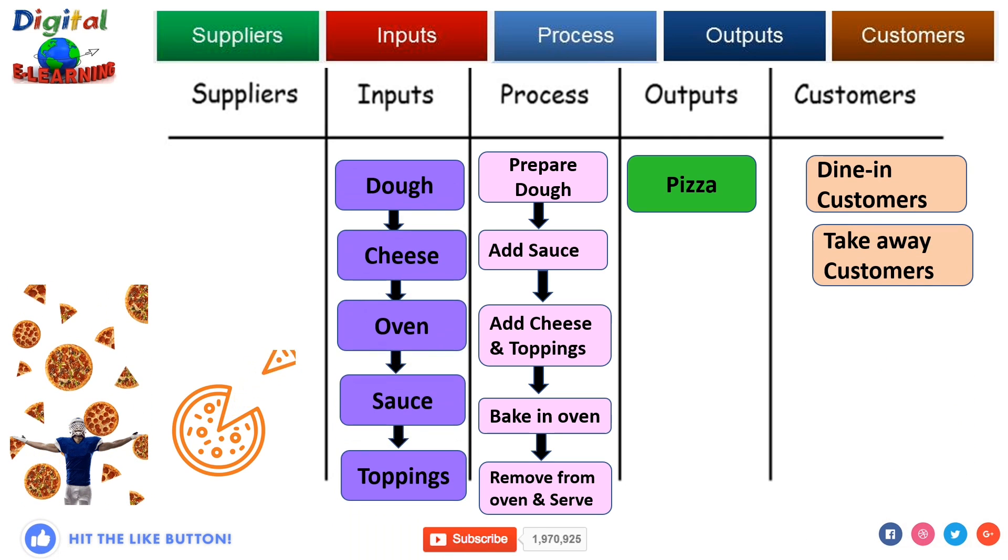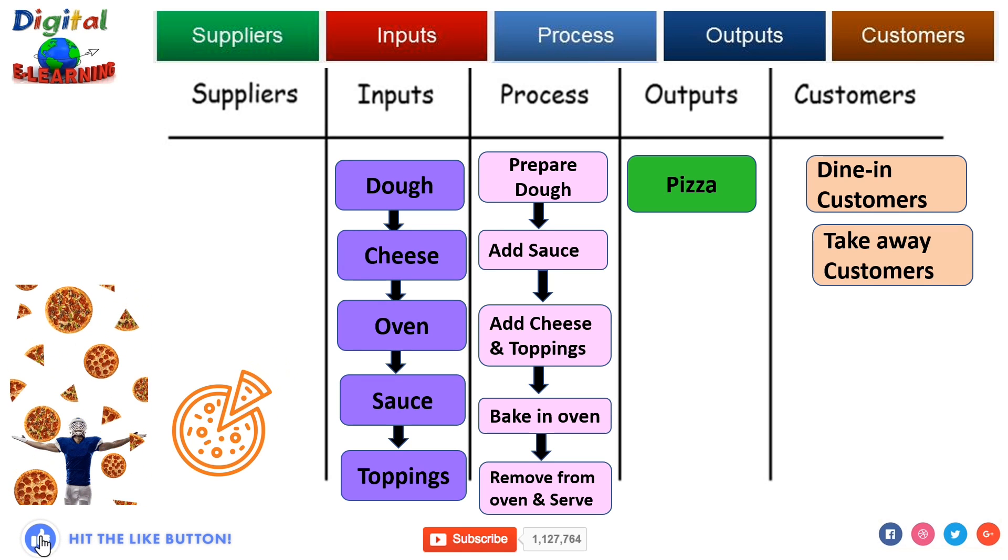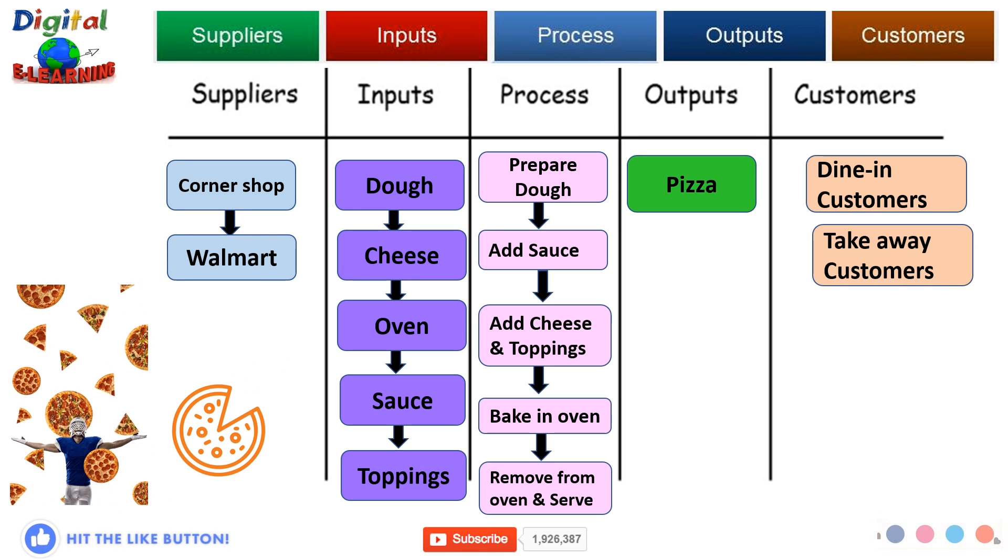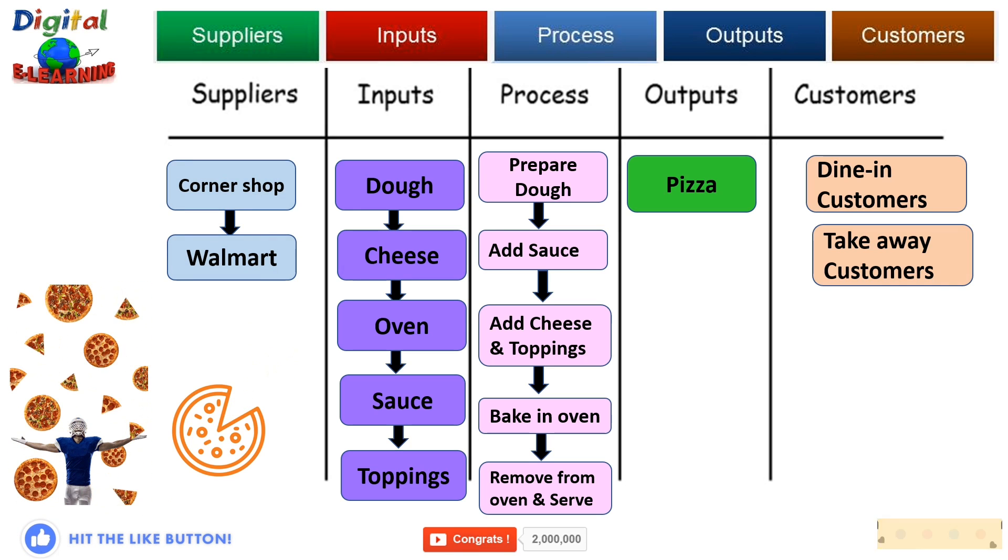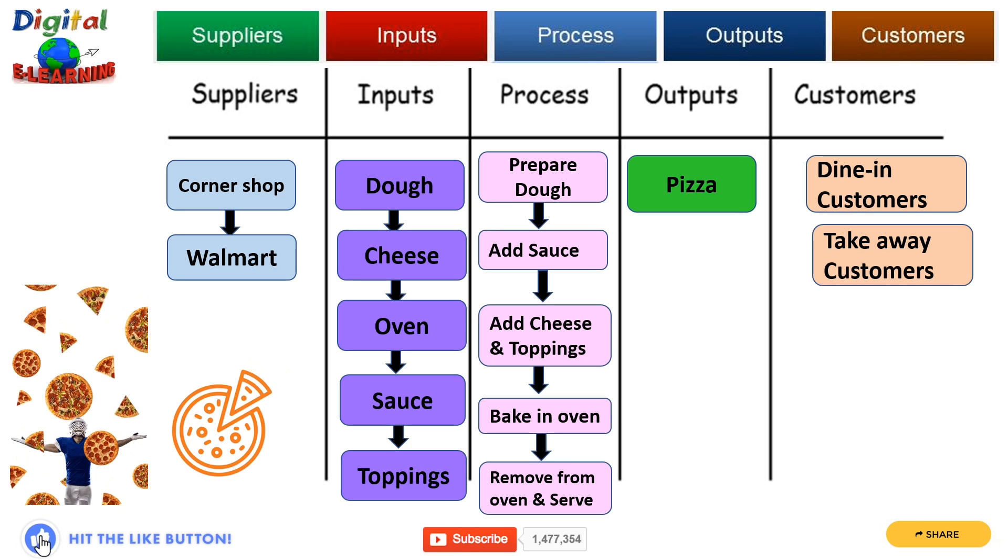My inputs that I need are dough, cheese, oven, sauce, and toppings. And who could be my suppliers? Again, the corner shop, Walmart, or any other source where you can get all these inputs. This is another example of a SIPOC diagram where we have used the pizza delivery process.